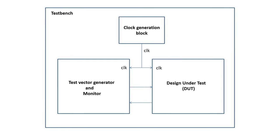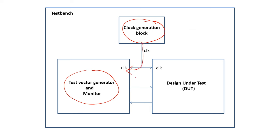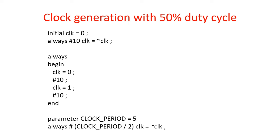Now, in general your design will also have sequential elements controlled by a clock. When testing a design with sequential elements, along with the test vector generator you should also have a clock generator module. This clock will go to both the test vector generator — which may have registers to store certain things — and to the DUT's registers.